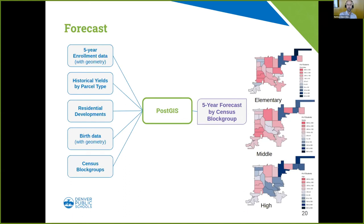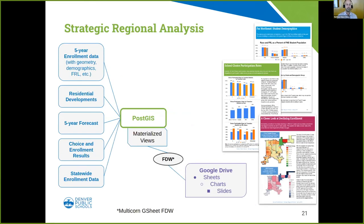One big thing we do is a five-year enrollment forecast. We take historical enrollment for the last five years, historical yields from parcel types, data on where every child is born in the city each year — all summarized at the census block group level — all done in PostGIS to produce elementary, middle, and high school forecasts for five years. This feeds into the Strategic Regional Analysis, our yearly report created within Google Drive. PostGIS does all the processing, creating pre-cooked data tables dumped to Google Drive through a foreign data wrapper, driving all our charting, which then goes into the slides.